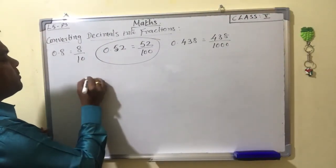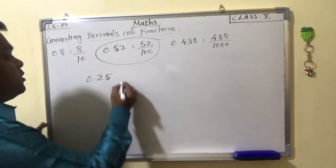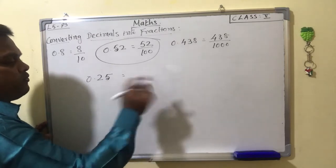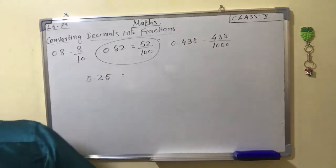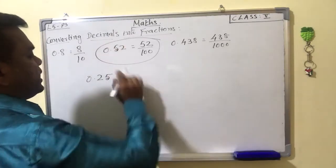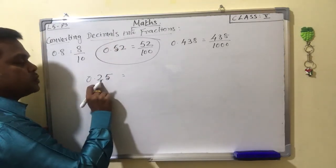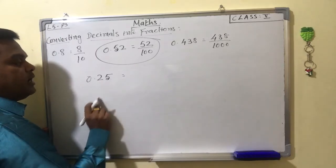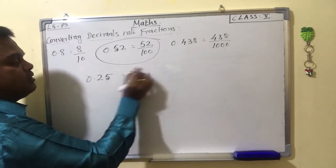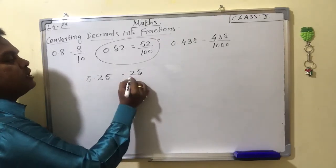For example, 0.25. We are going to convert this decimal number into a fraction. First, write the decimal number without the decimal point as the numerator. So 0.25 without the decimal point gives us 25 as the numerator.